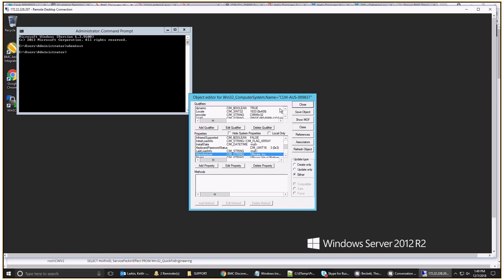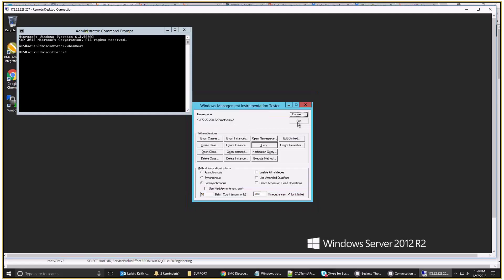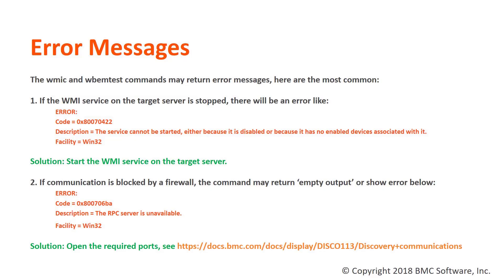When you're done, just click Close, close again, and exit out of the window. Now, let's say that you've run WMIC or WBEM test to test WMI connectivity and it has returned an error message. Usually these error messages can be somewhat cryptic, so we'll talk about some of the more common ones.